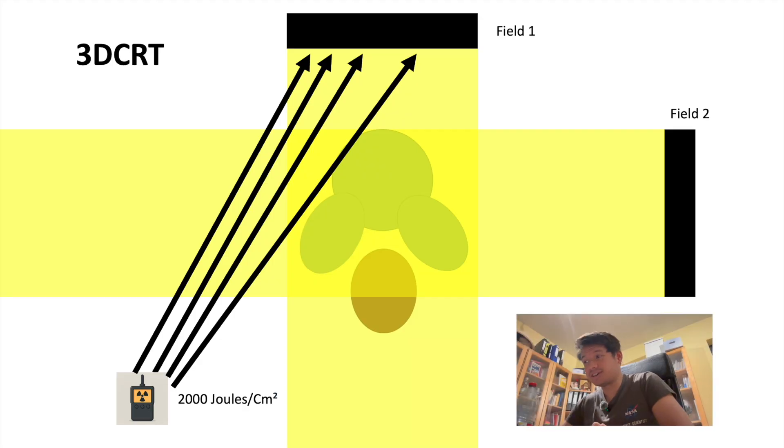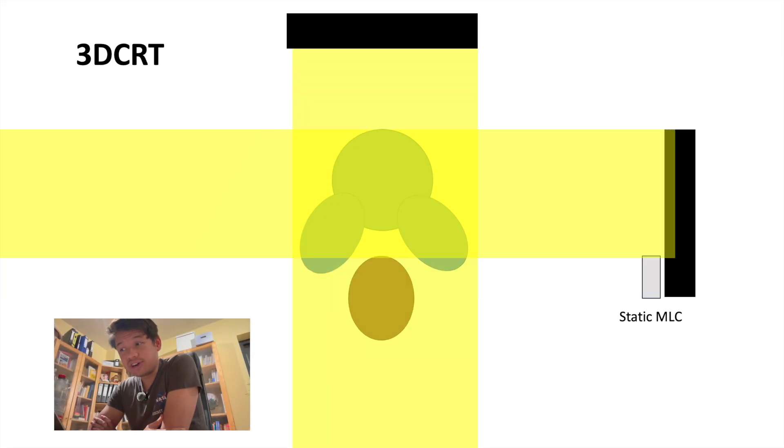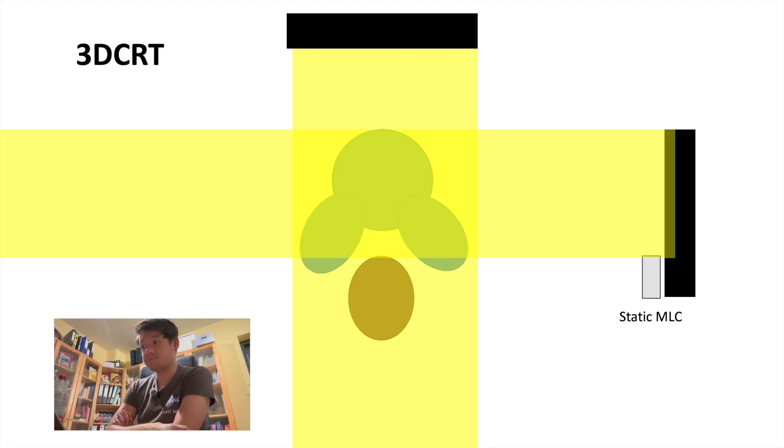This is just an illustrative example, and we could also measure the energy, the energy fluence expressed in joules per cm². As I mentioned earlier, MLCs are already used to shape the beam so that it conforms to the tumor's shape.